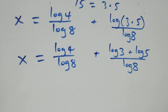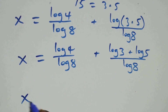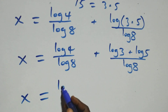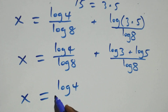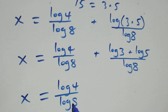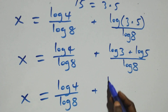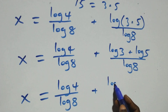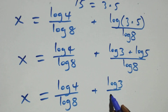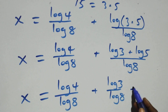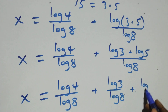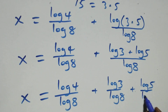Then next step here, we separate this into two fractions and we have x equals to log four over log eight, plus log three over log eight, plus log five over log eight.